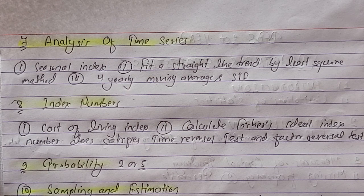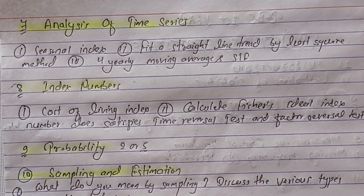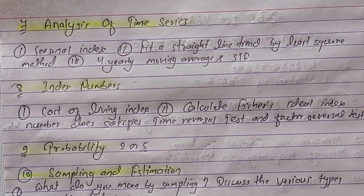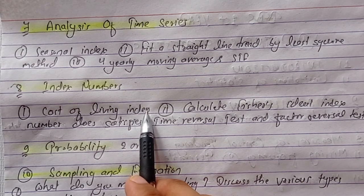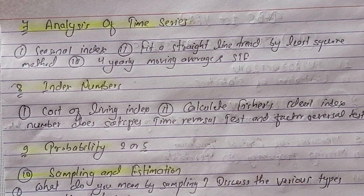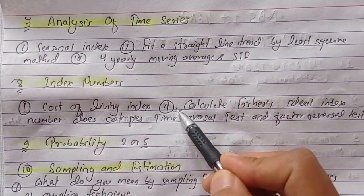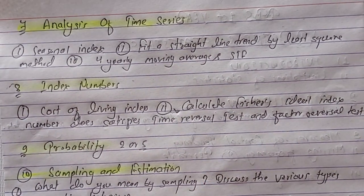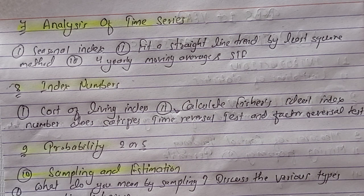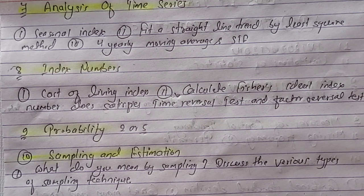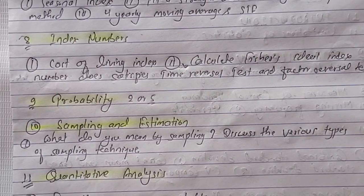Here is the index number. We can get the cost of living index number COLI question. The Fisher ideal index number satisfies the time reversal test and factor reversal test. This one is a great problem question. I already made videos on this that you can find in the playlist. Probably only one short question for 4 marks will come from this chapter.